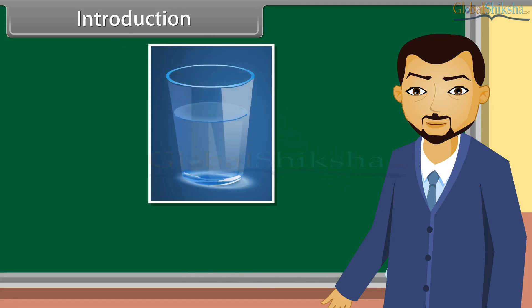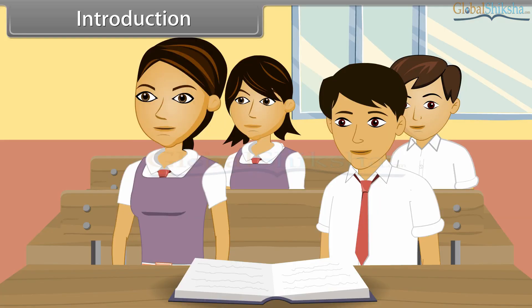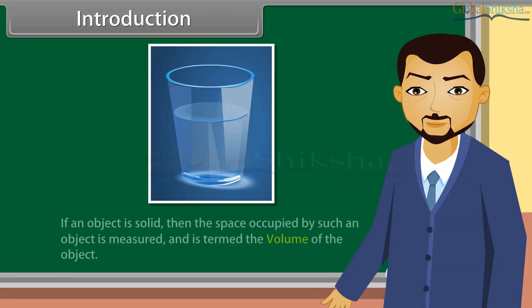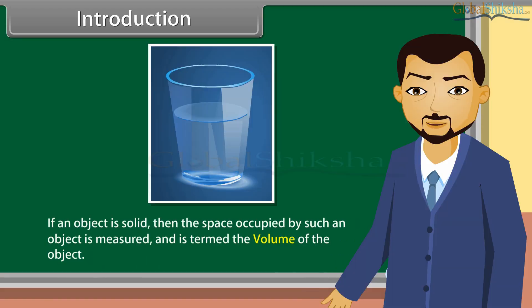This is a glass which is half filled with water. We can easily measure the capacity of glass or volume of water which is contained by the glass. If an object is solid, then the space occupied by such an object is measured and is termed as the volume of the object. Come, I will teach you more about volume today.